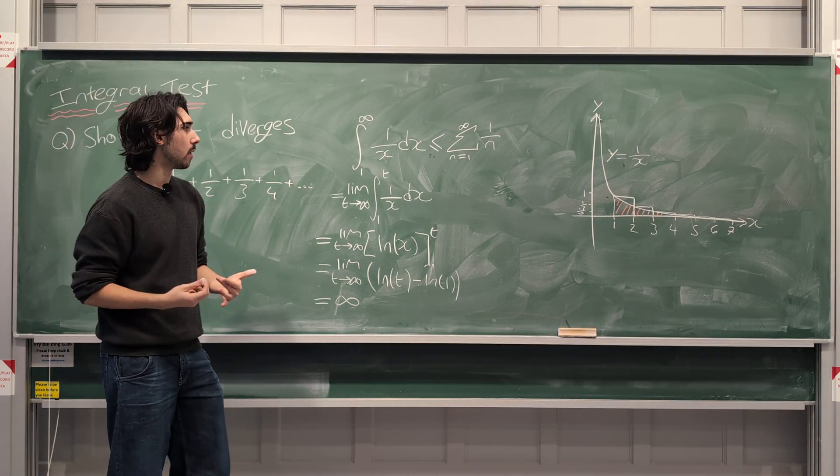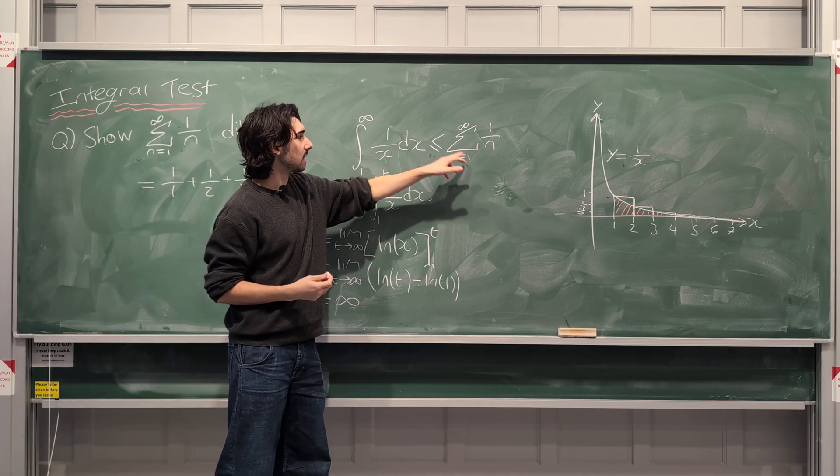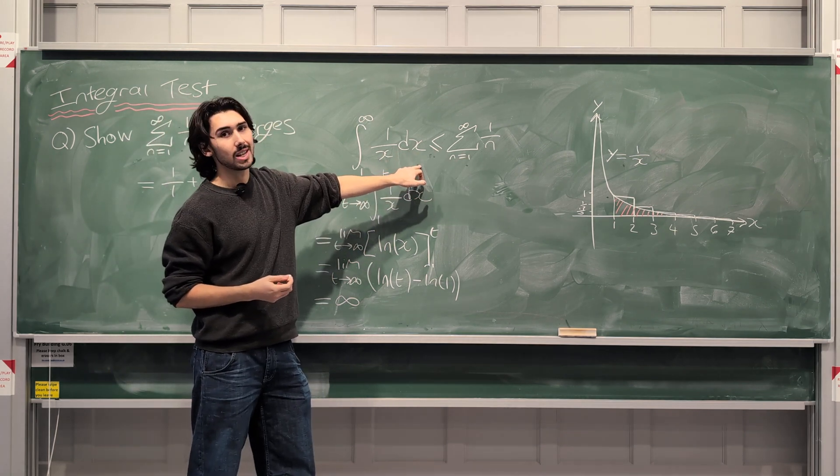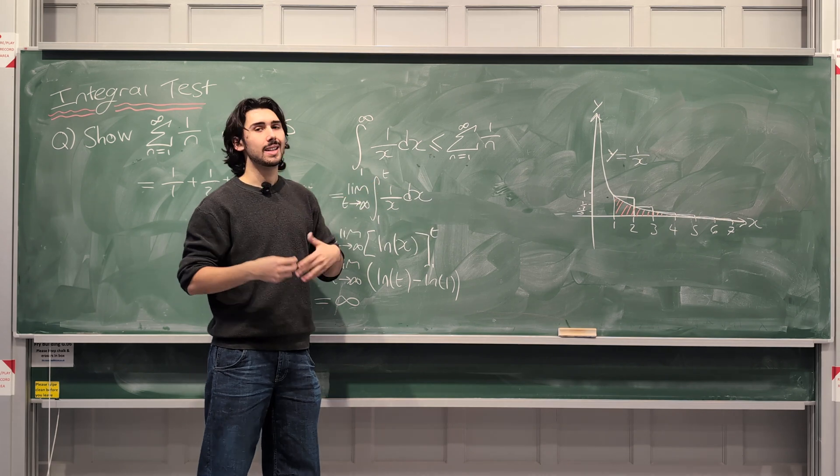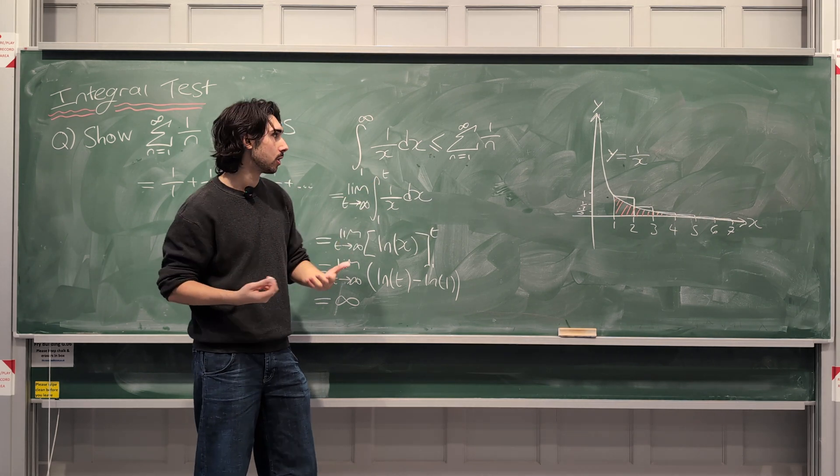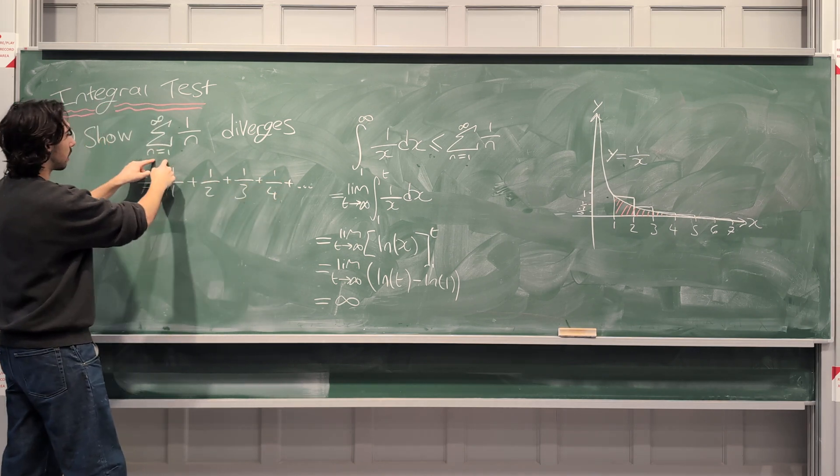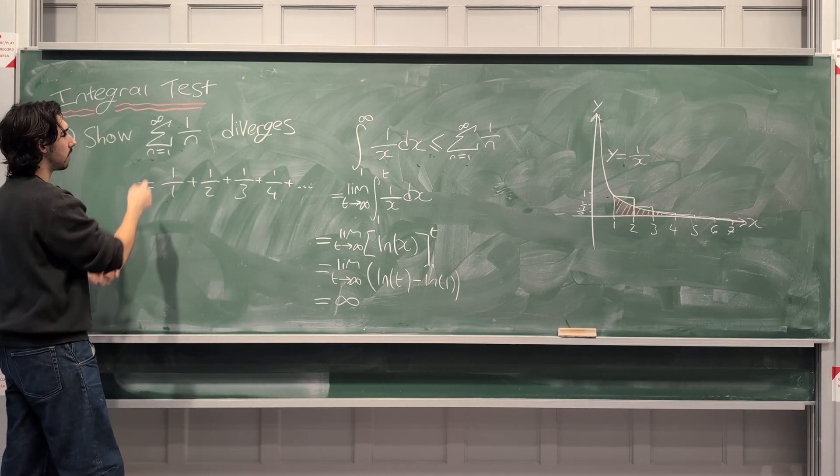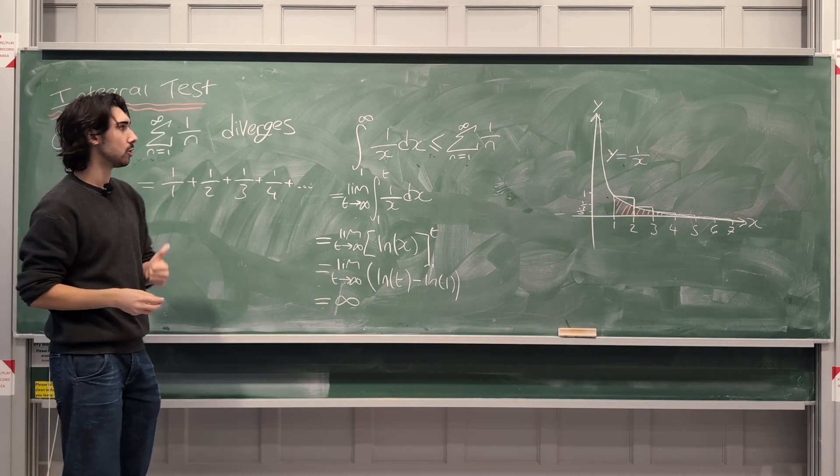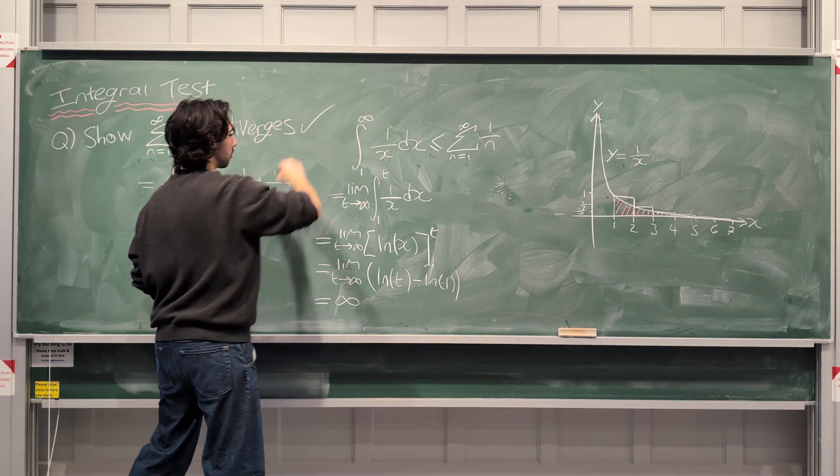So we've just shown that the integral diverges. Because the integral diverges, we're saying the sum is bigger than or equal to infinity, which means it has to diverge. So in other words, the sum of the reciprocals of all the natural numbers, the sum from n equals 1 to infinity of 1 over n, does indeed diverge. And we have proved it.